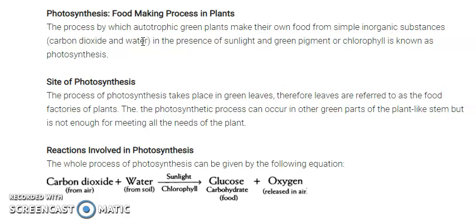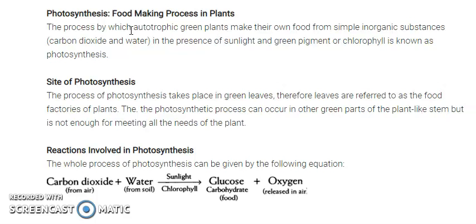With the help of these two substances — carbon dioxide and water — the plant makes its food. These are the two raw materials needed first. For the photosynthesis process to occur, we also need the presence of sunlight and green pigment, or chlorophyll. In the presence of sunlight and chlorophyll, the plant forms its food. This process is known as photosynthesis.